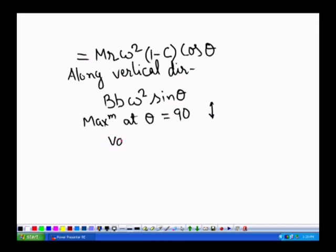So the value is equal to capital B, small b, omega square, and this is nothing but c times m r omega square.